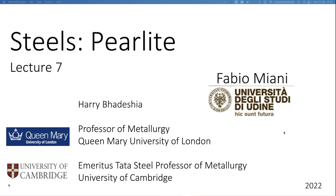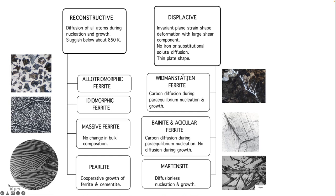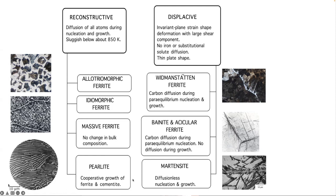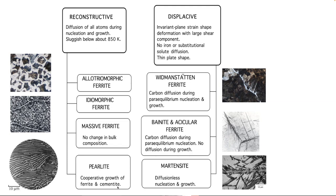Today I'm going to talk about the pearlite transformation, which is one of the most important in the vast majority of steels that we use today. Just to put it into context, it belongs to this class of reconstructive transformations. This is the microstructure we normally observe in an optical micrograph, and the key feature about pearlite as opposed to any of the other transformations is that we get the cooperative growth of ferrite and cementite, which means that the composition of the austenite does not change as long as we are in the iron-carbon system.